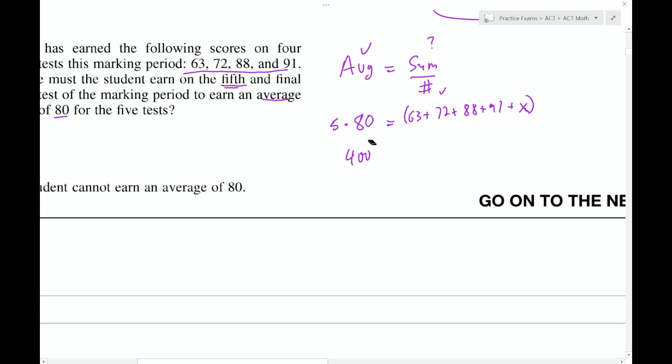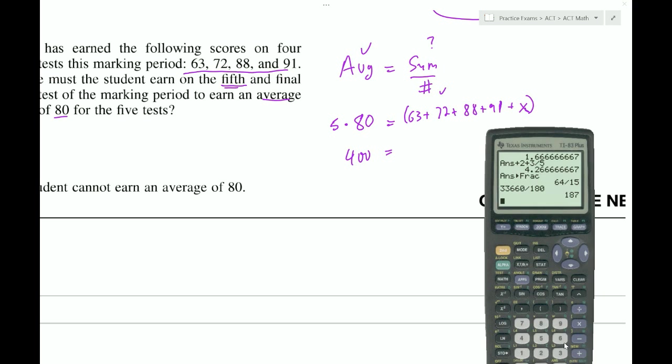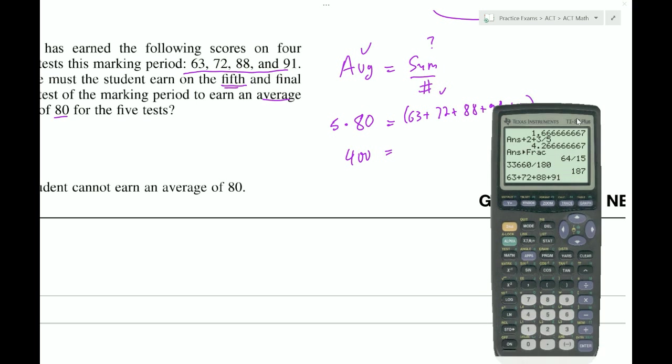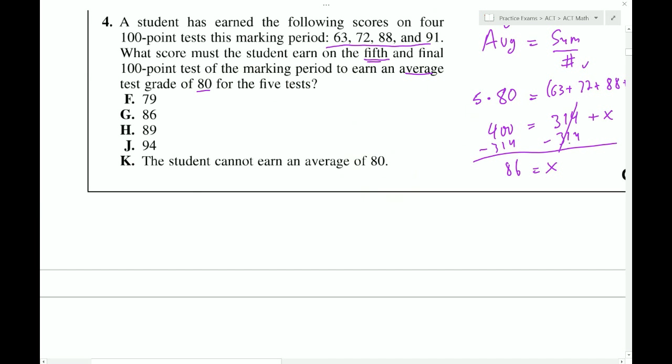And then we can add all these together in our calculator. So let's grab the calculator. And we'll do, let's see, 63 plus 72 plus 88 plus 91 plus x. Well, we can't do the x, right? So we'll just return this. It's 314 plus x. So then to get x, we just subtract 314 from both sides. And it looks like it's going to give 86 as a result. And that's choice G.